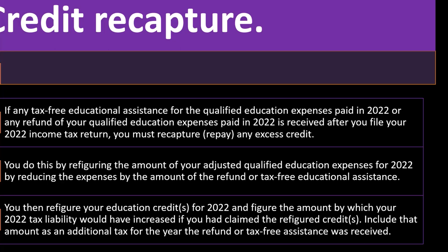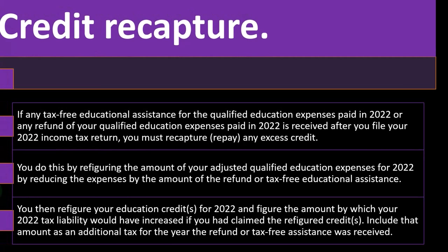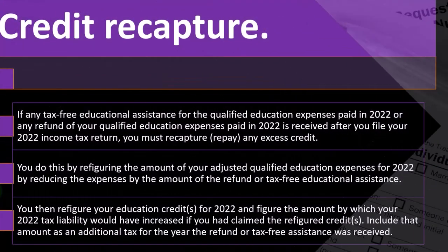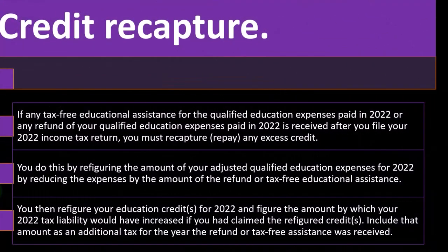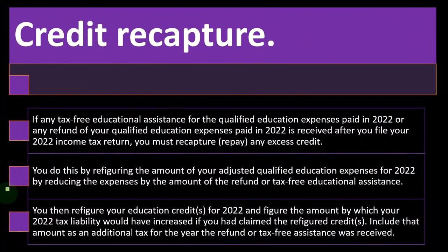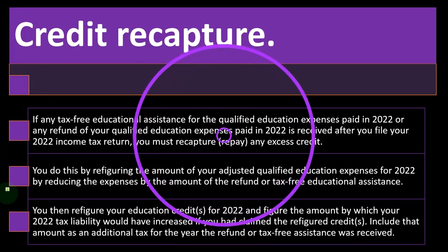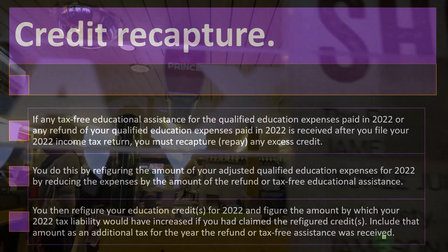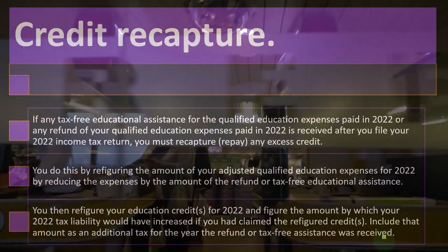In other words, you could go back and amend 2022, but that would be kind of a pain — you don't really like to do that. So we want to fix it in tax year 2023. We can go back and say: okay, what would be the difference in my taxes in 2022 had I adjusted and removed these expenses? How much lower would my lifetime learning credit be? You figure that difference and, instead of filing an amended tax return, you can include the amount as an additional tax for the year the refund or tax-free assistance was received — so you include it in 2023.